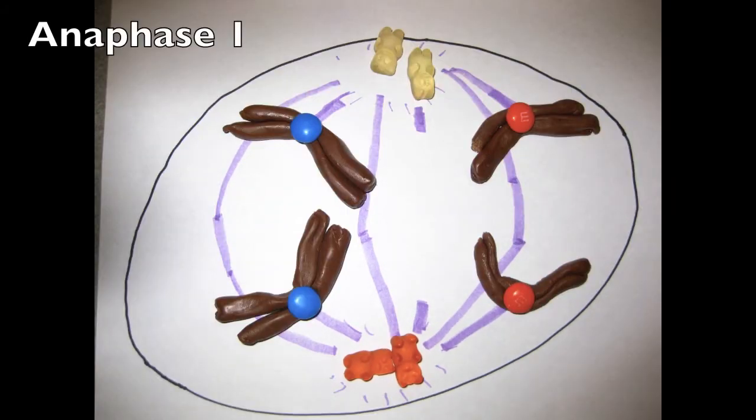Breakdown of proteins at the chiasmata cause the homologs to separate in anaphase. The sister chromatids move together to opposite poles.